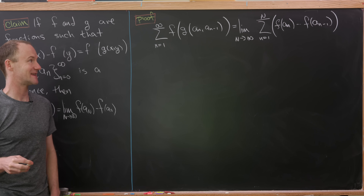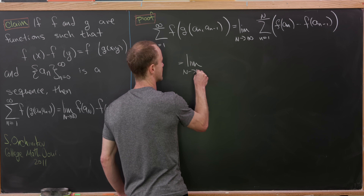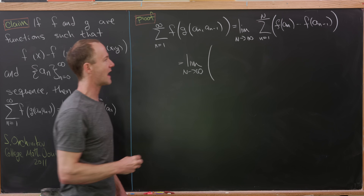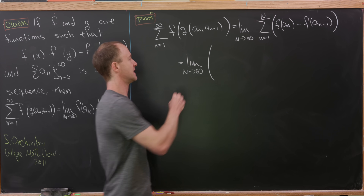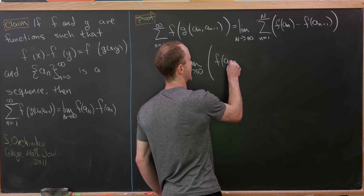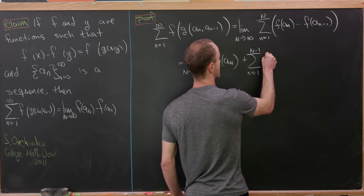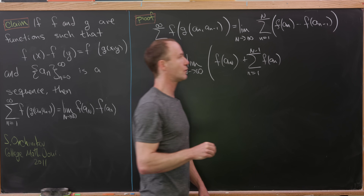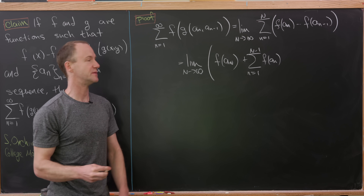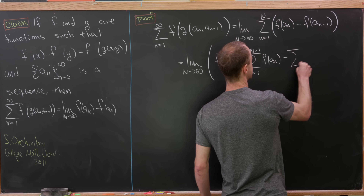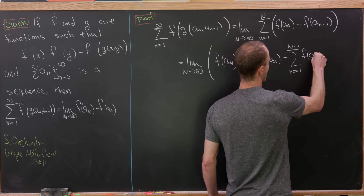We are going to end up with a telescoping series. Here we've got the limit as capital N goes to infinity, and I'm going to pull out the nth term from the first f of a_n. That's going to give me f of a sub capital N. Then we'll have plus the sum as n goes from 1 to capital N minus 1 of f of a_n. I'm going to split this sum into two pieces, then have the sum as n goes from 1 to capital N minus 1 of another f of a_n.